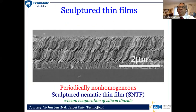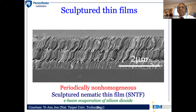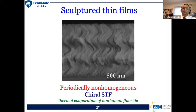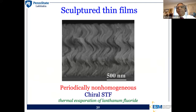Here is the SEM image of a periodically non-homogeneous Sculptured Thin Film — they look like tilted S-shapes. The SEM image of a periodically non-homogeneous chiral sculptured thin film is shown here; it comprises three-dimensional helical nanocolumns. Both of these types of STFs have been used in actual experiments for surface wave propagation.